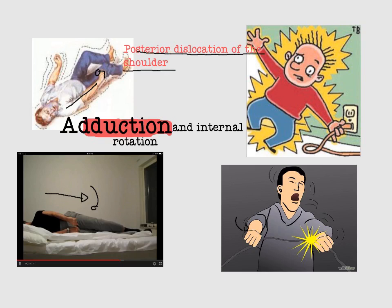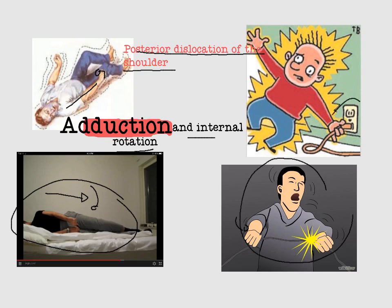Exaggerated adduction and internal rotation can be caused by a strong epileptic fit. As we can see, a patient with an epileptic fit experiences strong adduction and internal rotation, resulting in posterior dislocation of the shoulder. A similar mechanism occurs with a strong electrical shock, which can also cause adduction, internal rotation, and posterior dislocation.